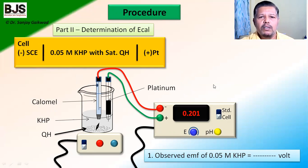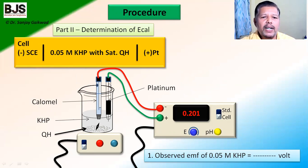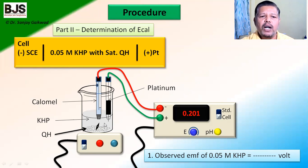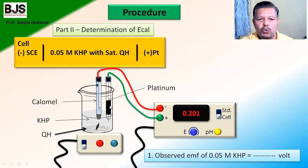What is the role of quinhydrone powder? This is an important question. The platinum electrode is dipped into the solution, but when it is dipped into the saturated quinhydrone powder solution, the platinum electrode is converted into the quinhydrone electrode. Therefore, quinhydrone powder is used for this purpose.